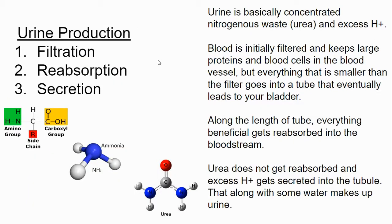To produce urine, which is concentrated urea, we have to have filtration, reabsorption, and then secretion. Urine is basically concentrated urea — nitrogenous waste from the chopped-up bits of our amino acids and proteins. It also includes some excess hydrogen ions, which are associated with acids.